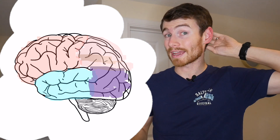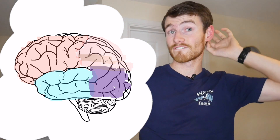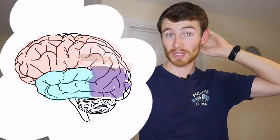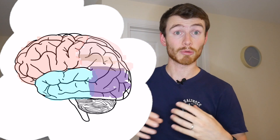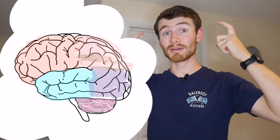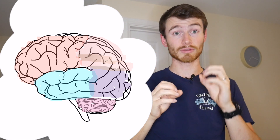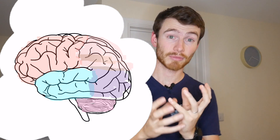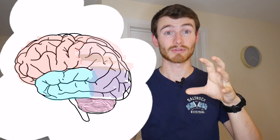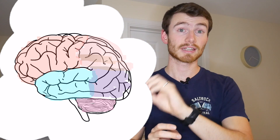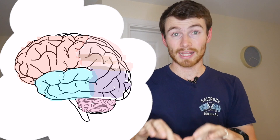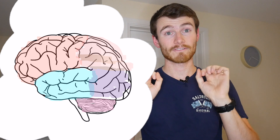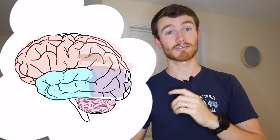Your occipital lobe at the back is all to do with visual processing — sight and seeing things. As you move further down things get more primitive. Your cerebellum sits beneath the occipital lobe and handles fine motor coordination — things like writing, where you've got to move different muscles in your hand neatly, or playing a musical instrument where you really have to think about where your muscles go.